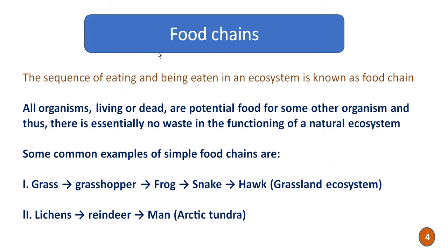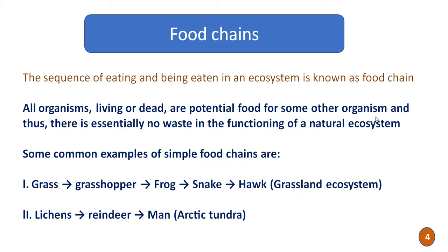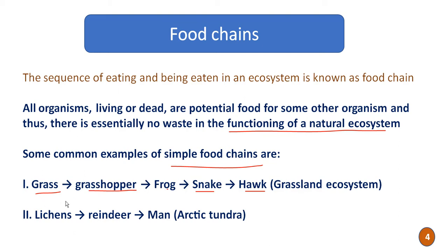Food chains are the sequence of eating and being eaten — every individual is eaten and also eats others. All organisms, living or dead, are potential food for some other organism, so there is essentially no waste in the functioning of a natural ecosystem. Common examples include: grass → grasshopper → frog → snake → hawk in a grassland ecosystem. In the Arctic tundra: lichens → reindeer → man.